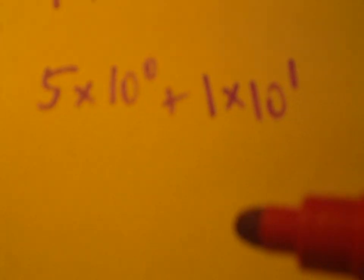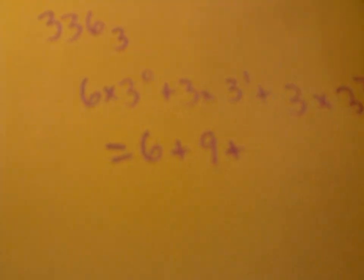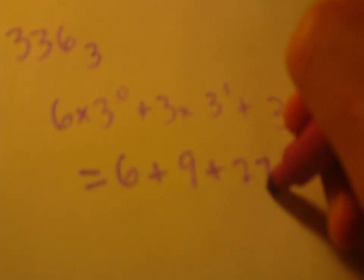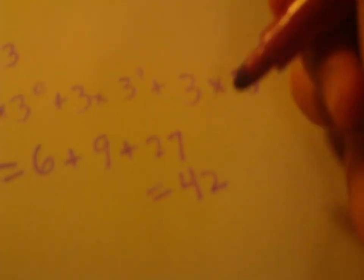Because, just like base 10, where we made it like this, we're going to do this in base 3. So, this equals 6 plus 9 plus 27, which equals 42. And, 336 in base 3 is equivalent to 42 in base 10.